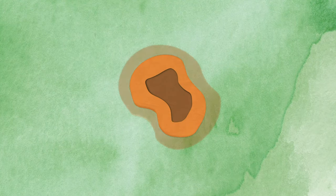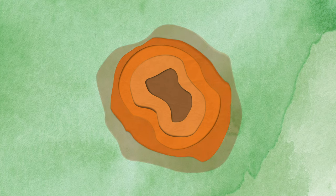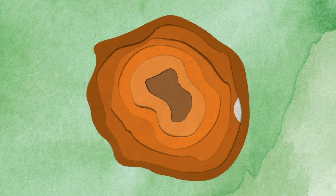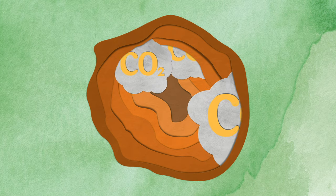Trees reach their most productive stage of carbon storage at about 10 years old, at which point they are estimated to absorb 48 pounds of CO2 per year.